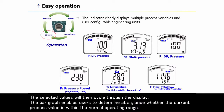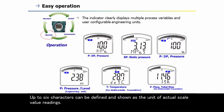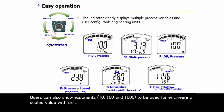The bar graph enables users to determine at a glance whether the current process value is within the normal operating range. Up to six characters can be defined and shown as the unit of actual scale value readings. Users can also show exponents for engineering scaled value with unit.